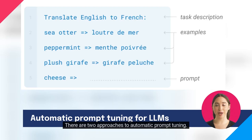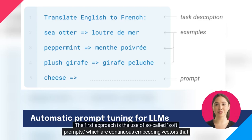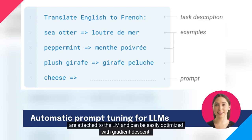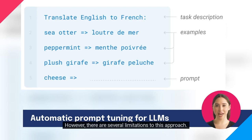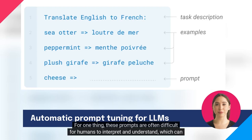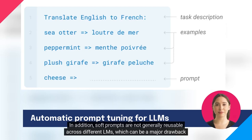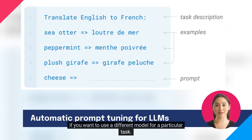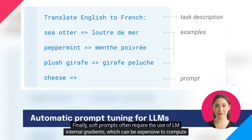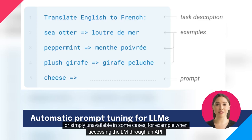There are two approaches to automatic prompt tuning. The first approach is the use of so-called soft prompts, which are continuous embedding vectors that are attached to the LM and can be easily optimized with gradient descent. However, there are several limitations to this approach. For one thing, these prompts are often difficult for humans to interpret and understand, which can make it hard to understand how and why the LM is making certain decisions. In addition, soft prompts are not generally reusable across different LMs. Finally, soft prompts often require the use of LM internal gradients,